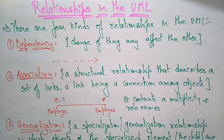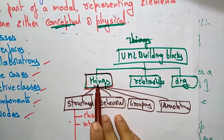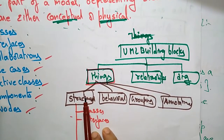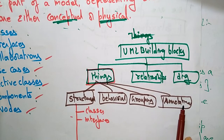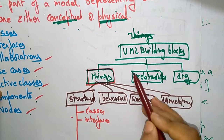Let us continue with the building blocks of UML. In the previous video I explained about one of the building blocks — the things. Now coming to the next building block, that is relationships. After that we will discuss about diagrams. UML building blocks are things, relationships, and diagrams. Things are again divided into structural, behavioral, grouping, and notational.